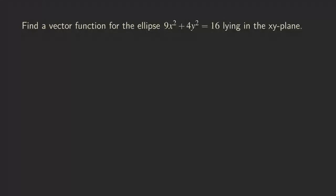How do we do this? The way that we parameterize an ellipse is that we can use the idea of how we parameterize a circle. Before we start, we actually just want to review how we parameterize a circle first. A circle has the equation in this form: x squared plus y squared is equal to a squared, where a is positive.